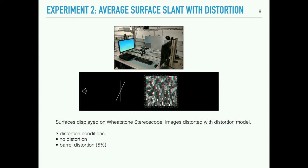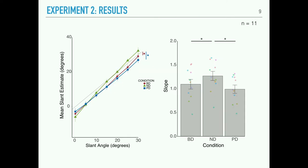We tested three different distortion conditions: a barrel distortion condition and a pincushion distortion condition, both at 5% strength, plus a non-distorted condition. For both barrel and pincushion distortion, observers consistently underestimated the overall slant of these surface patches. In the non-distorted condition, they were sometimes underestimating and sometimes overestimating slightly, but overall there was no net bias in their perception of surface slant.